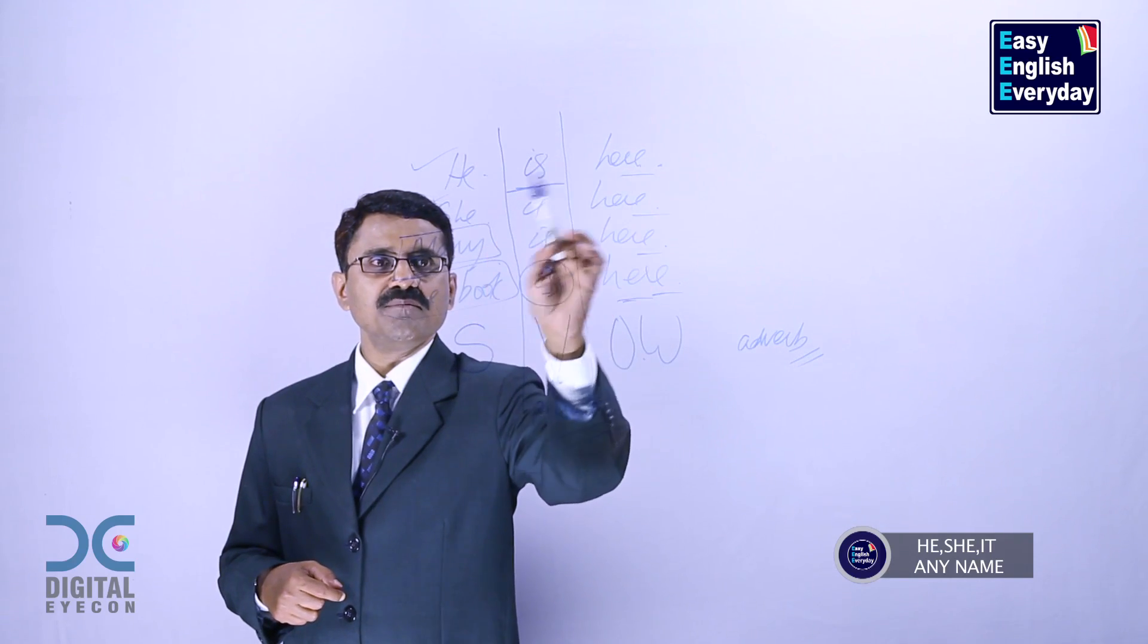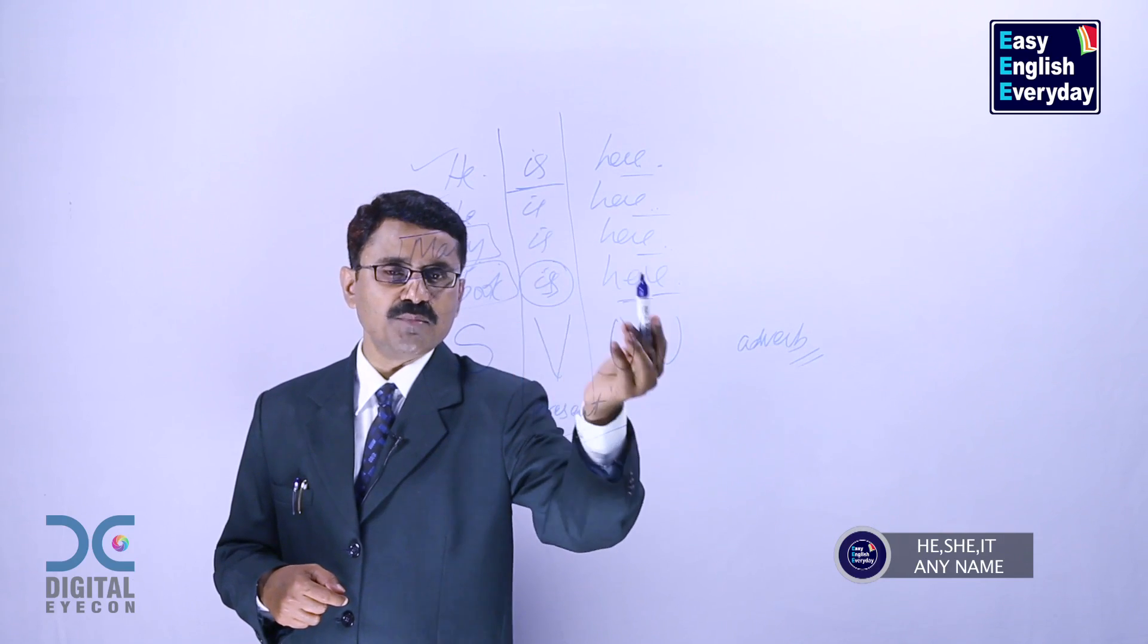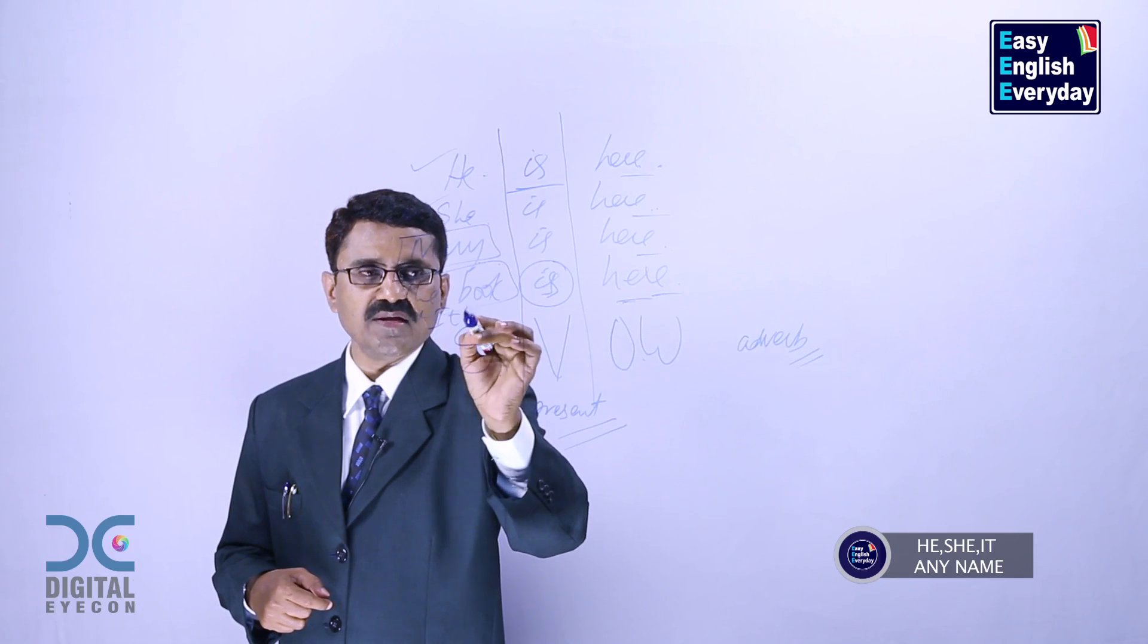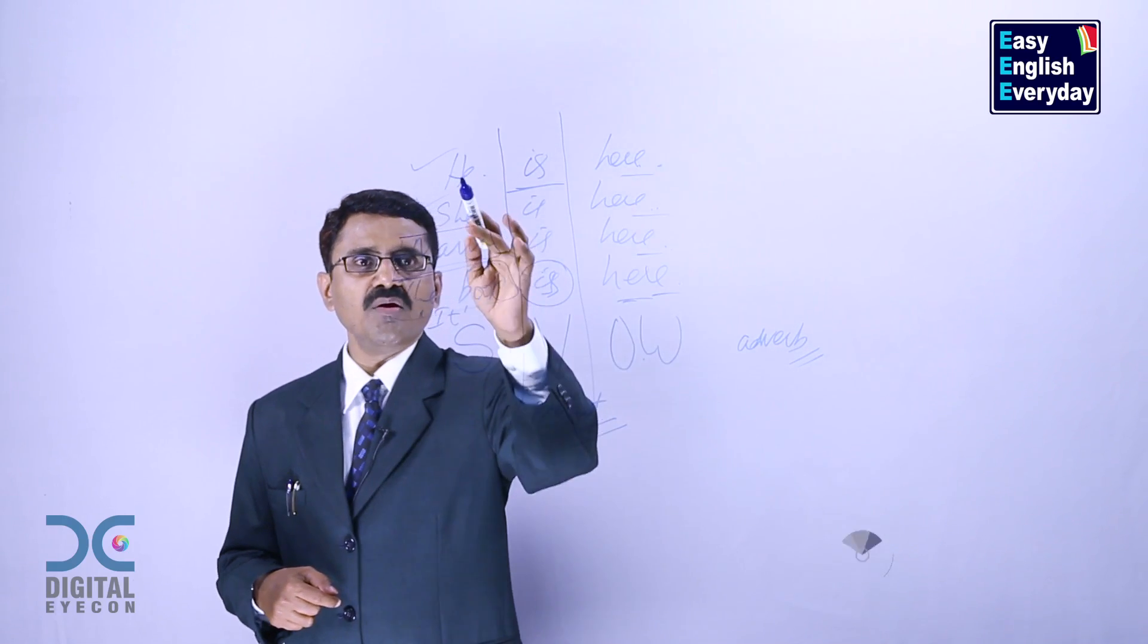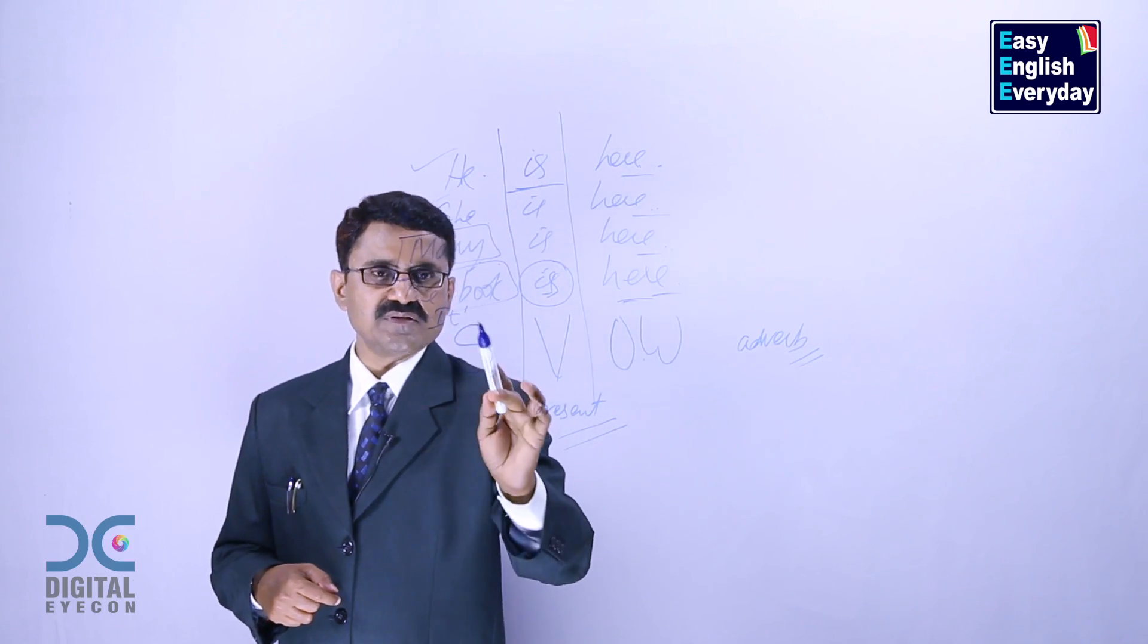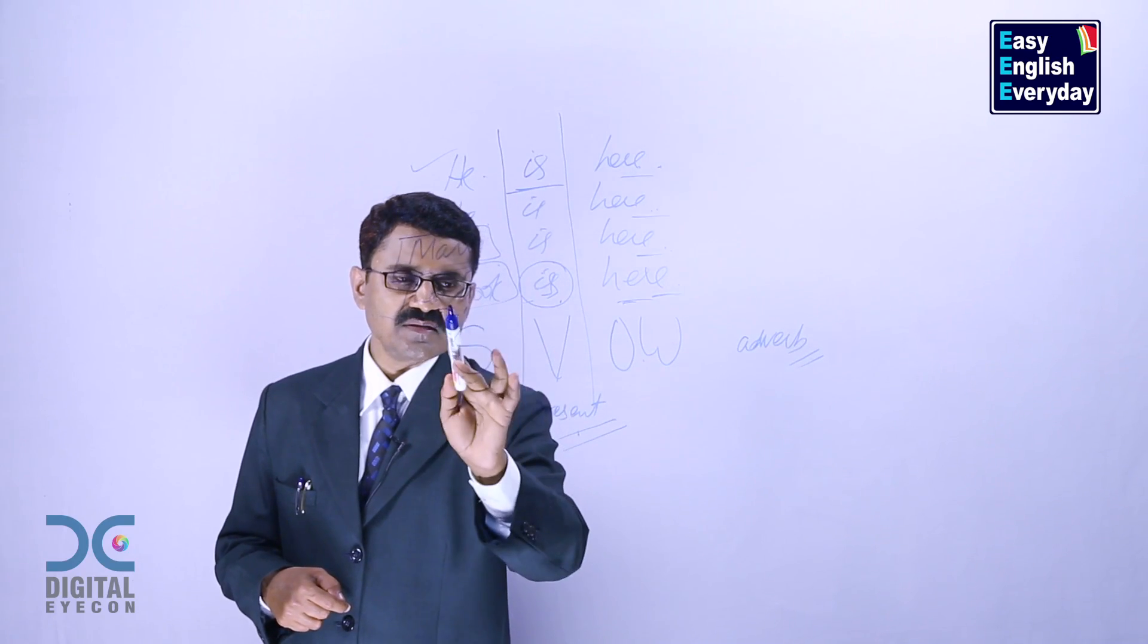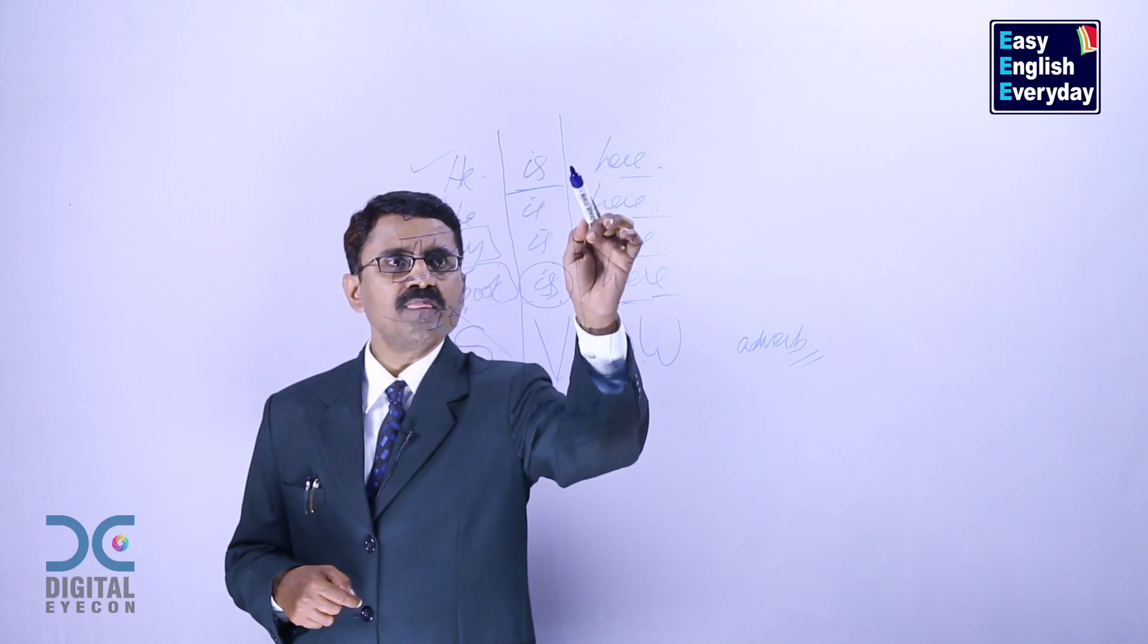He is here. She is here. Mary is here. The book is here. Or you can also replace it with a pronoun called it. It is here. All these are singular persons. It goes only with singular person and it indicates present tense. This is called grammar.